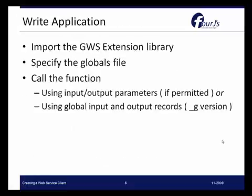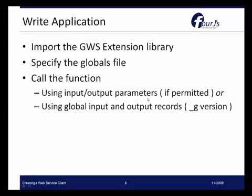We need to write the application or modify an existing application to utilize these new functions. The first thing we'll do is import the GWS extension library by simply using the word import and the library name, which is com, C-O-M. We'll specify the globals file — in our example, it's going to be the WS_calculator.inc file. Then we can call the function. There may be the ability to use a function with input-output parameters, or a function that allows us to use global input and output records. All of those global functions are given an underscore G suffix.